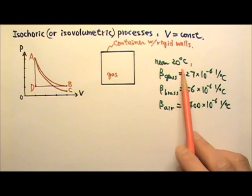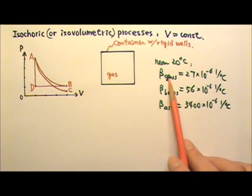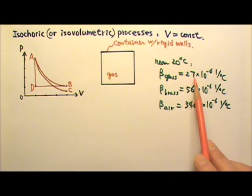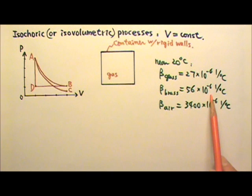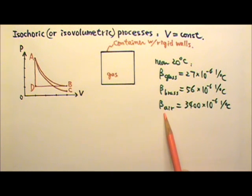For example, near 20 degrees Celsius, the beta for normal glass is 27 times 10 to the negative 6. The beta for brass is 56 times 10 to the negative 6. But the beta for air is a much bigger 3400 times 10 to the negative 6.